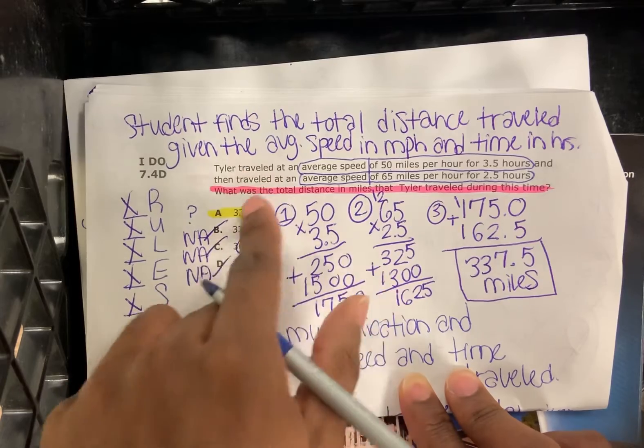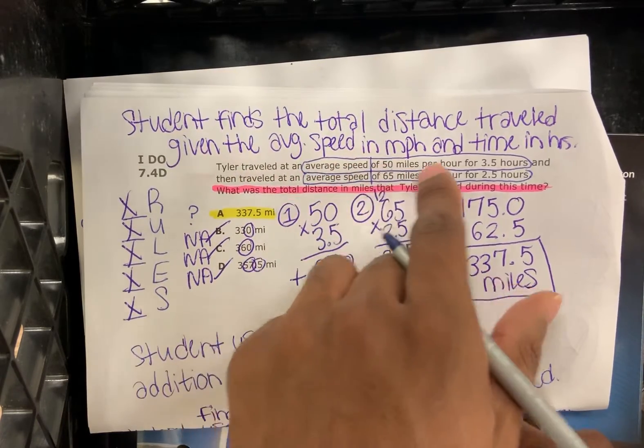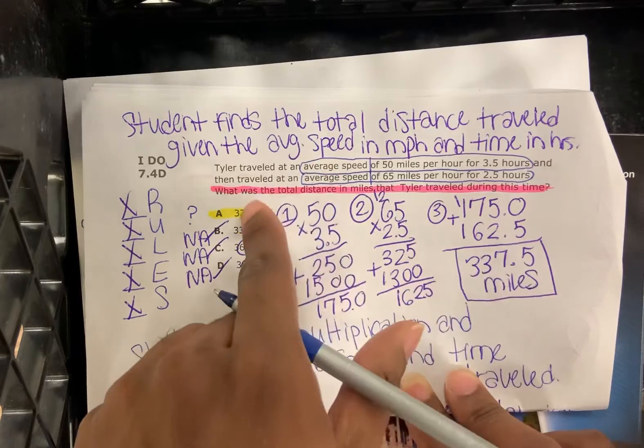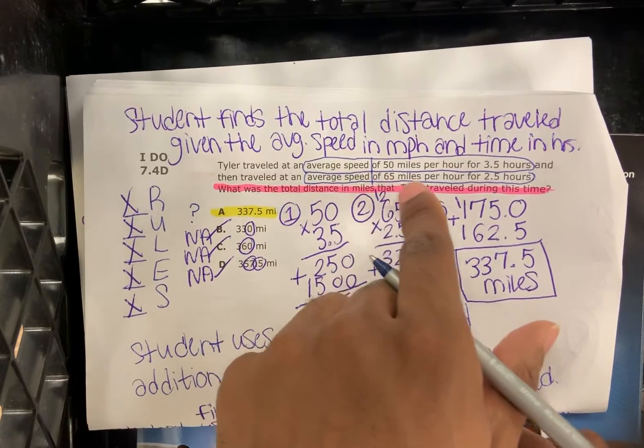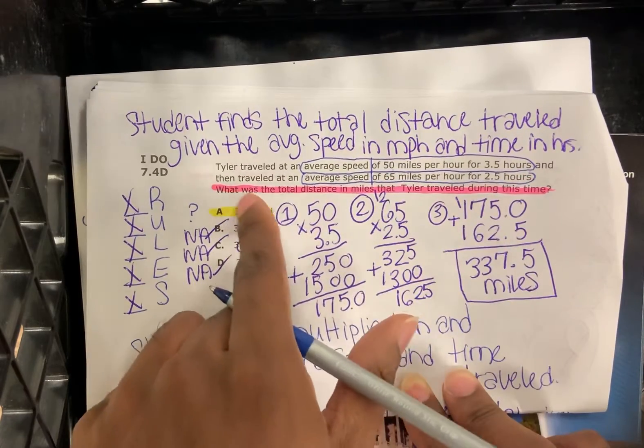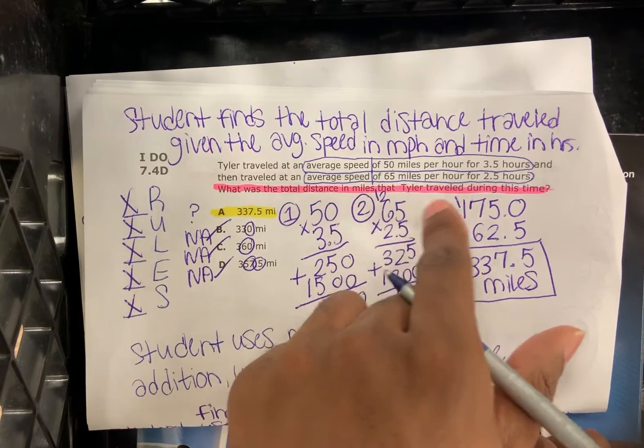Let's read the word problem. Tyler traveled at an average speed of 50 miles per hour for three and a half hours and then traveled at an average speed of 65 miles per hour for two and a half hours. What was the total distance in miles that Tyler traveled during this time?